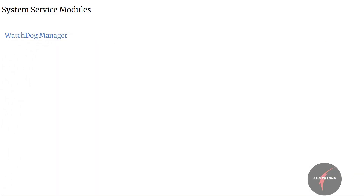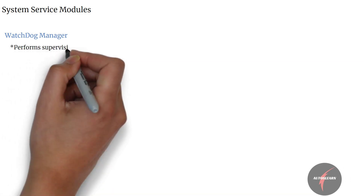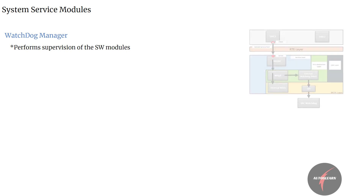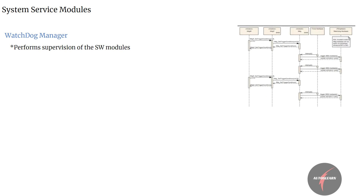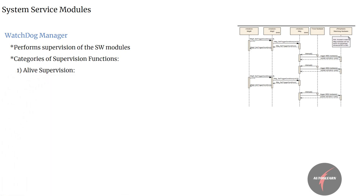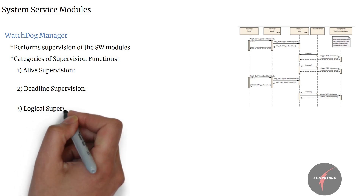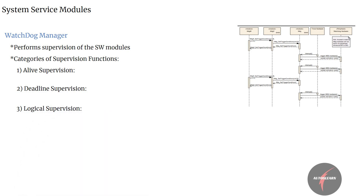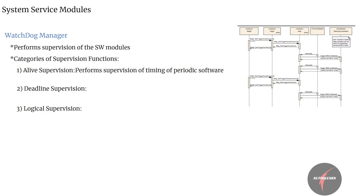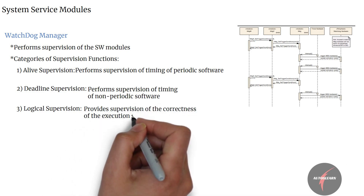Then we have the Watchdog Manager service. At a high level, the Watchdog Manager performs supervision of software modules, also called supervised entities. These are supervised by supervision functions which are categorized as: alive supervision, deadline supervision, and logical supervision. Alive supervision performs supervision of timing of periodic and non-periodic software. Logical supervision provides supervision of correctness of the execution sequence.